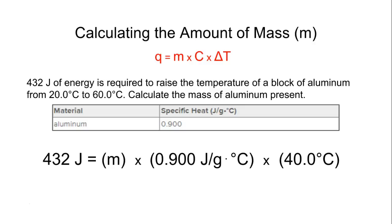And we're just going to use algebra to solve for M, which is our mass. Which if you look at the units of the specific heat, our mass has to be in grams. So let's go ahead and solve for that. And you get 12.0 grams. So make sure you can put that in your calculator and get the right answer.